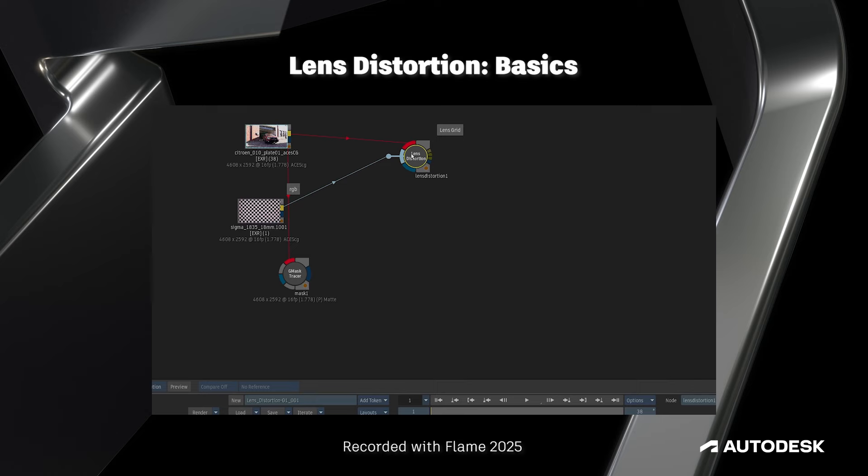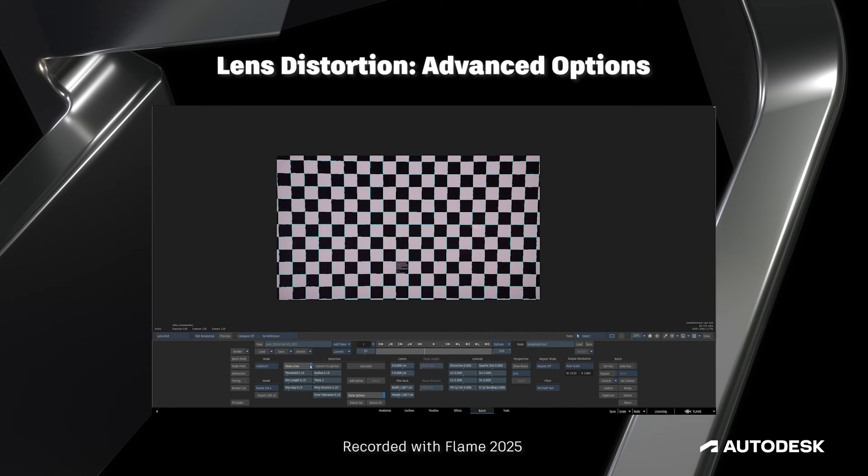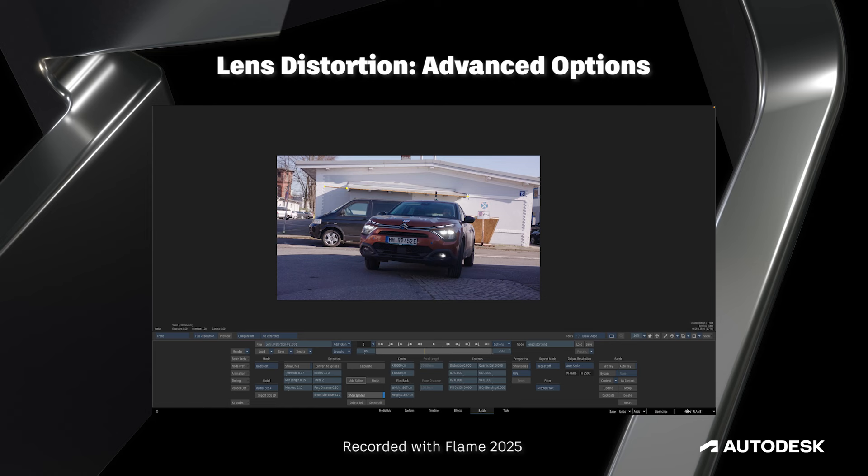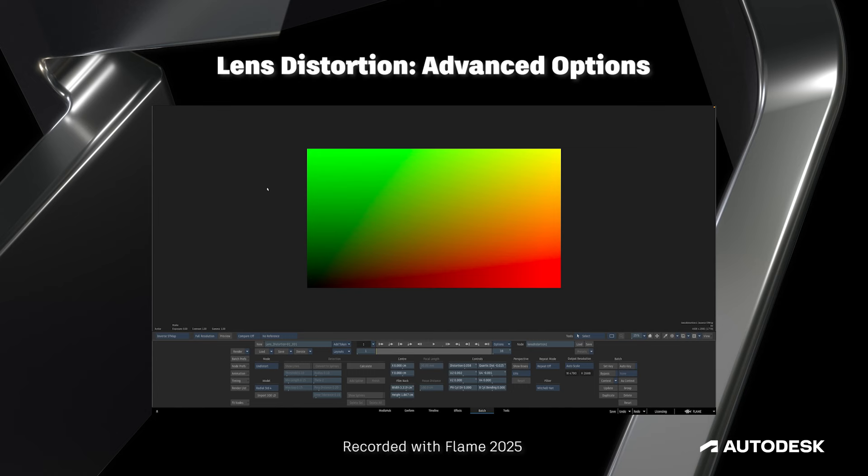Continuing inside of batch, we have another new node — this time it's a reworking of an existing node, and that's lens distortion. With a handful of reworked controls for working with lens distortion grids, detecting lines in an image, or drawing your own splines, combined with the ability to export undistort and redistort ST maps, compensating for lens distortion has never been easier.